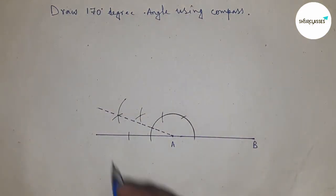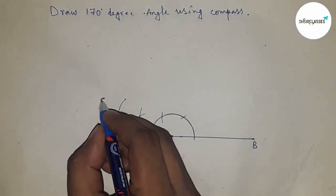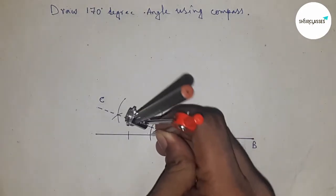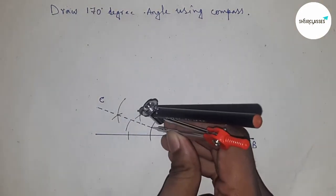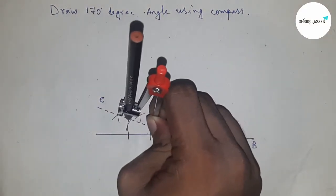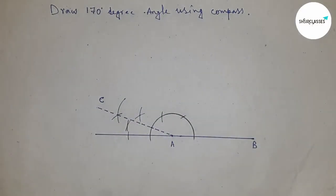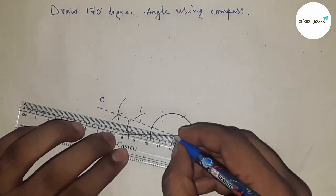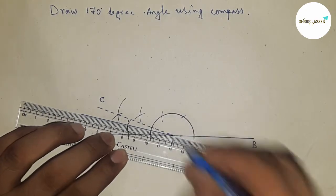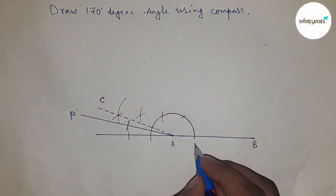Next, having to bisect. So this is point C. Bisecting the angle, so taking a length and drawing arc by this way which intersect at a point. Next, joining this to get 170 degree angle. So this is P.